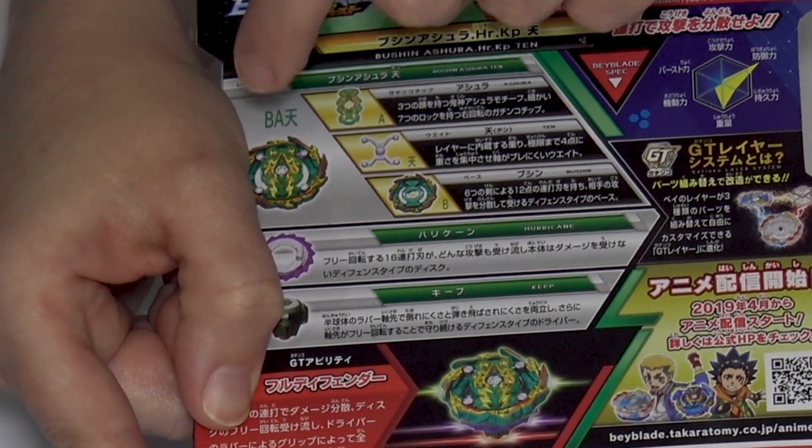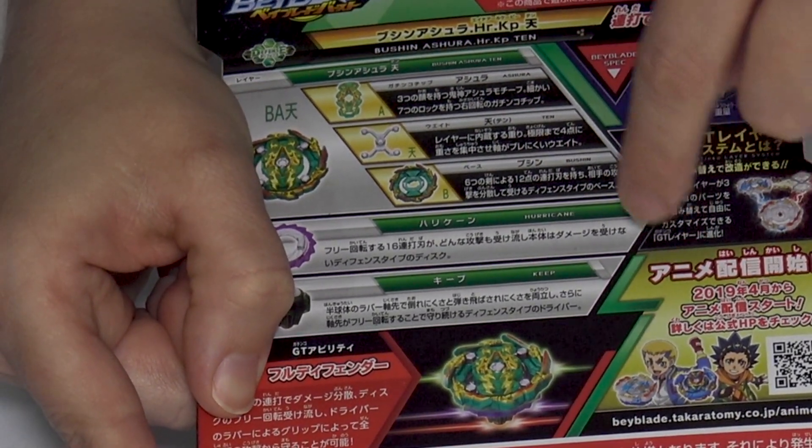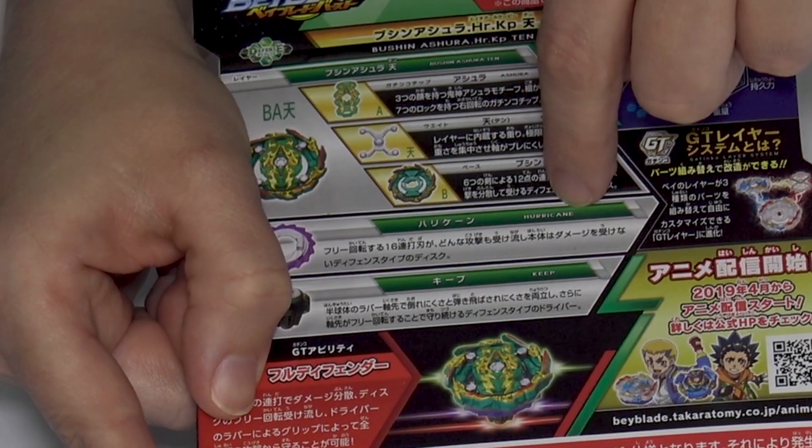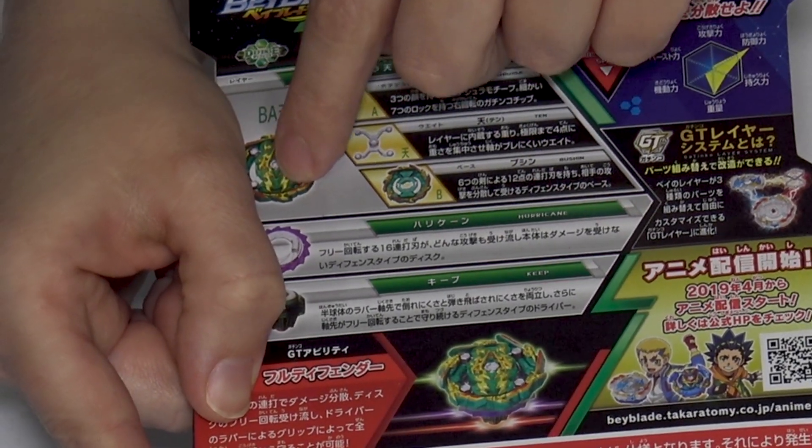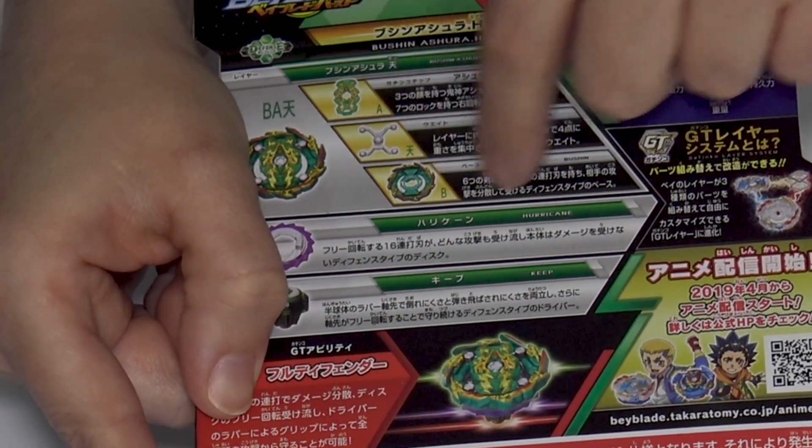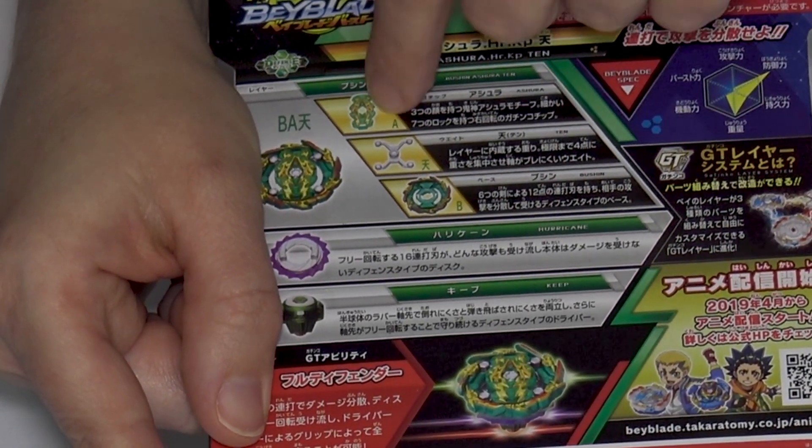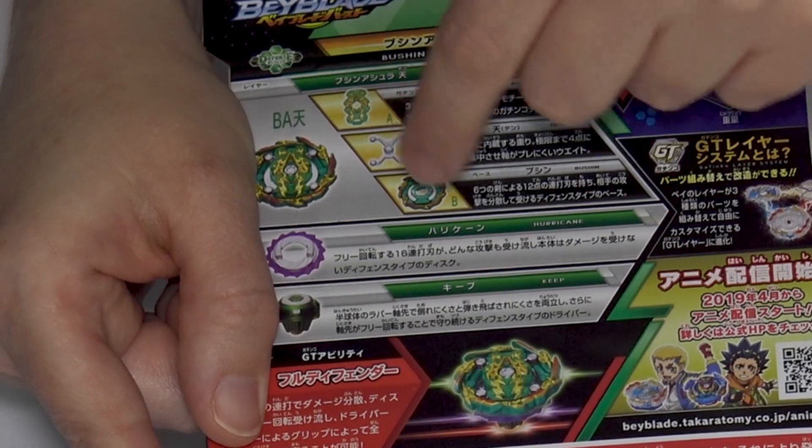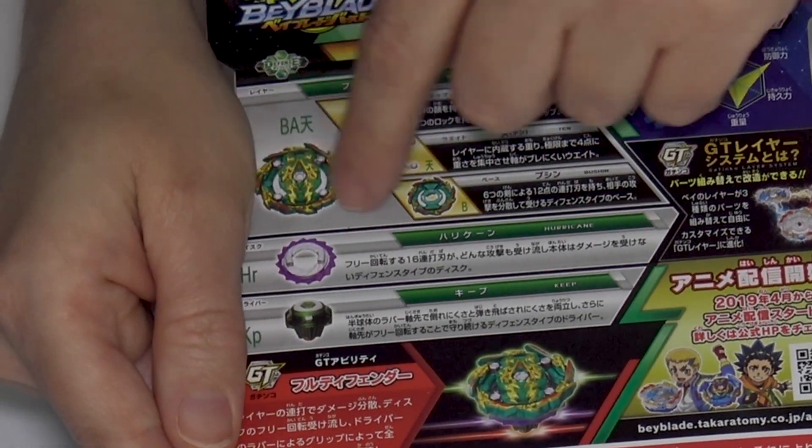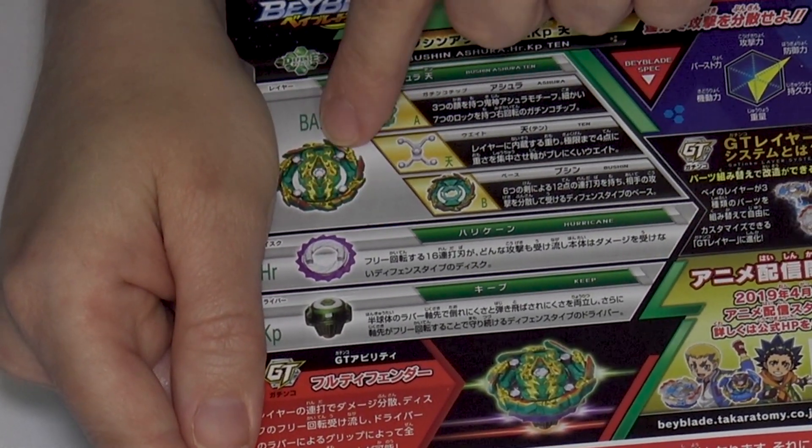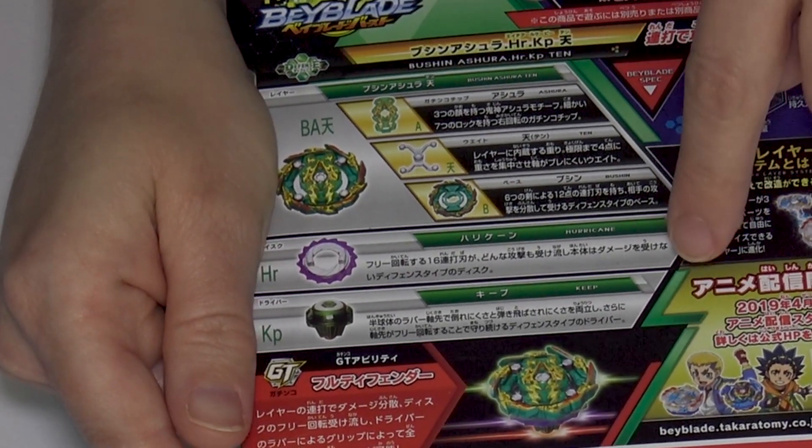It's called Tin here, which is confusing because there is a Ten Forged disc. Anyway, this is Tin, a Tin weight, and then you have the Bushin base. You've got Ashura, Tin, and Bushin for this really cool looking layer.